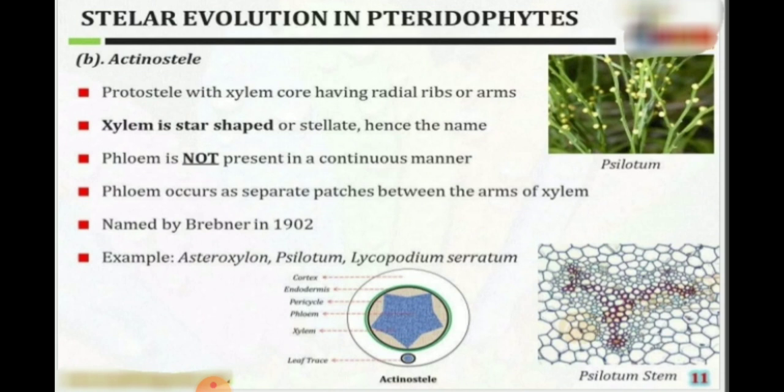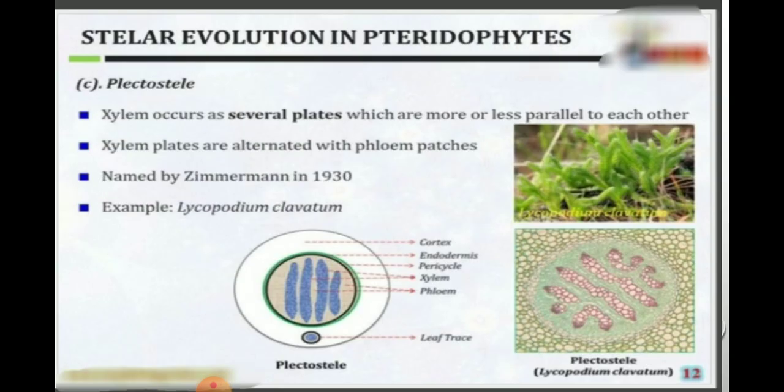The second type is actinostele. This is a modification of the haplostele. Xylem is star-shaped and phloem is not present in a continuous manner. Phloem occurs as separate patches between the arms of xylem. Examples are Phylloglossum and Lycopodium serratum.